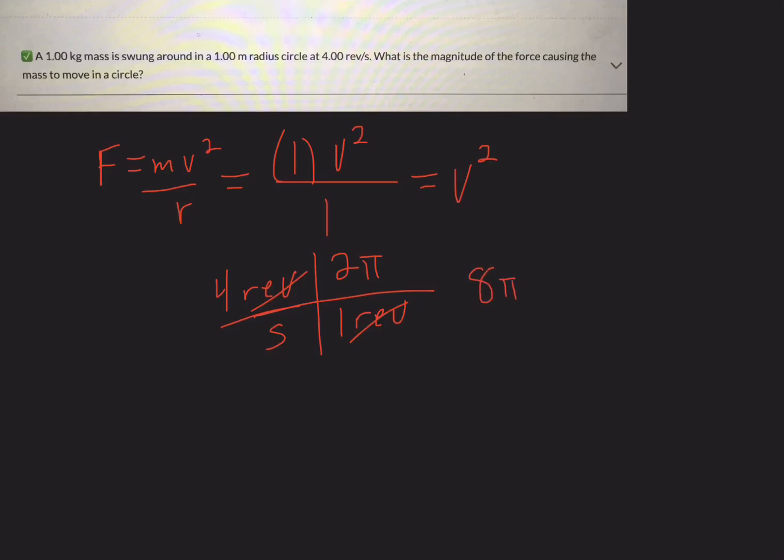So I'm going to take eight pi and I'm going to square that. So eight times pi is like around 25. And then we're going to square that and we're going to get like 632 newtons of force.